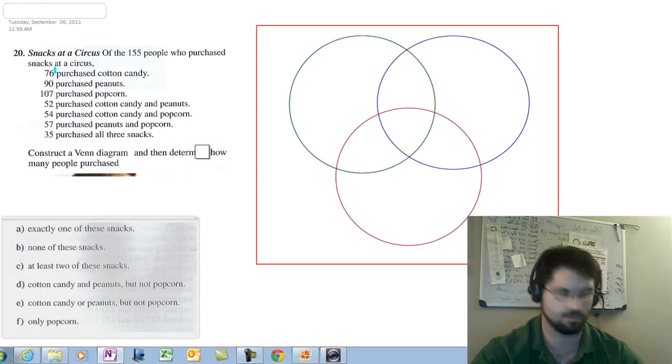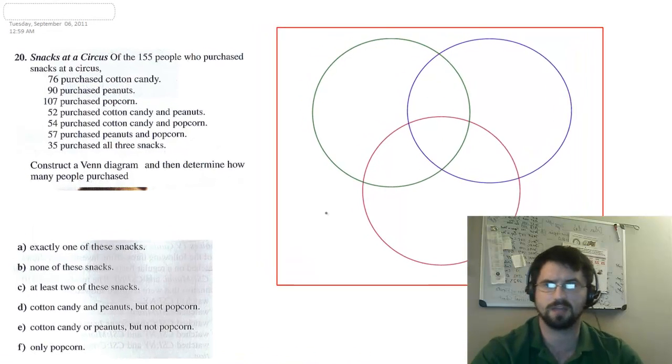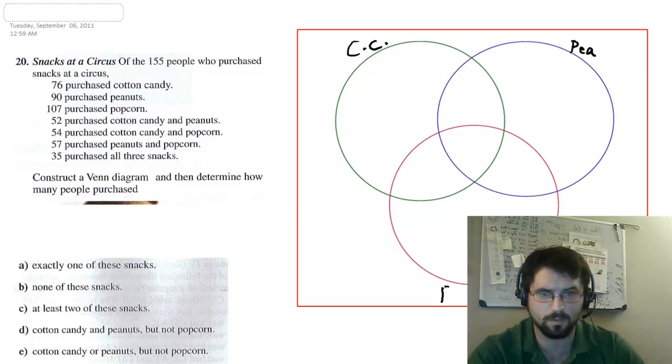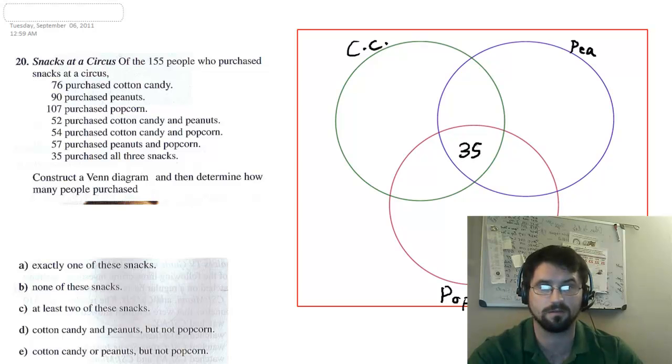Number 20 says, of 155 who purchased snacks at a circus, 76 purchased cotton candy. Let me put cotton candy here. 90 purchased peanuts. So I'll put P there. And 107 purchased popcorn. 52 did a combo. 54 did a different combo. 57 did this different combo. And 35 did all three. And that's where I always begin is with the 35, or with the ones who did all three. So I'm going to fill in the 35 first.